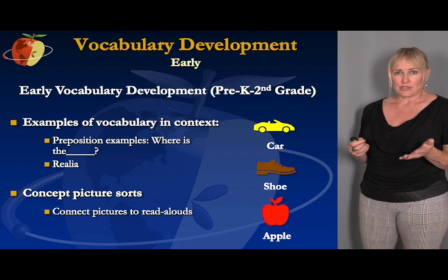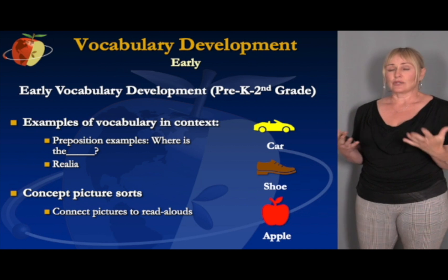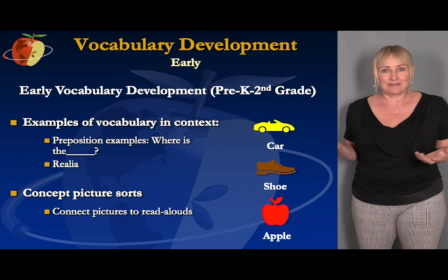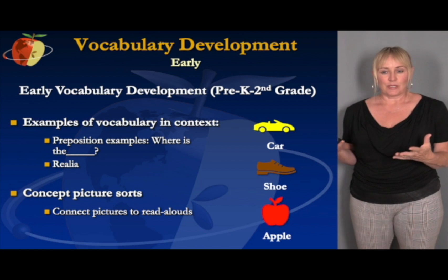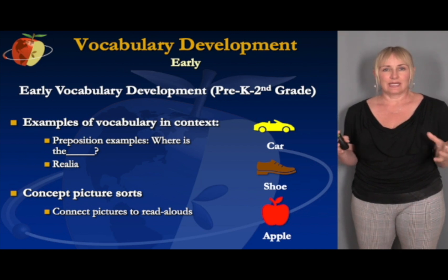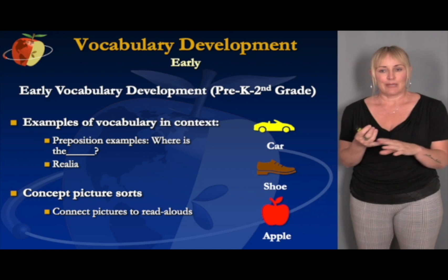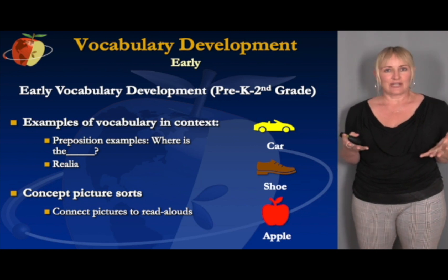Also, concept picture sorts. We talked about how students can do sorts even before they start reading. So let's say you're reading a book aloud to them in the first weeks of kindergarten about kindergarten. Before you even start reading this book, you grab things that are parts of the book — things they'll need for kindergarten: scissors, glue, paper, a backpack. They can touch these things, look at them, and name what they are.